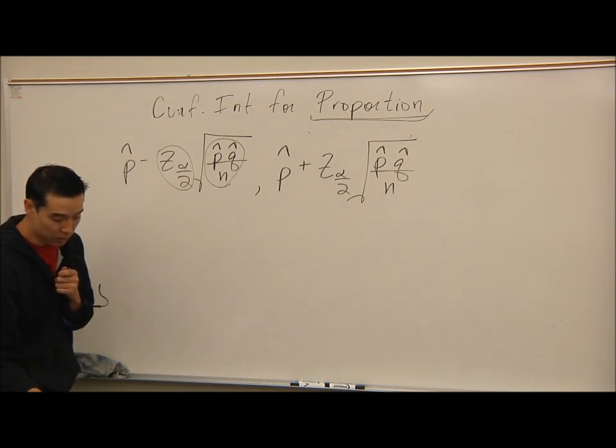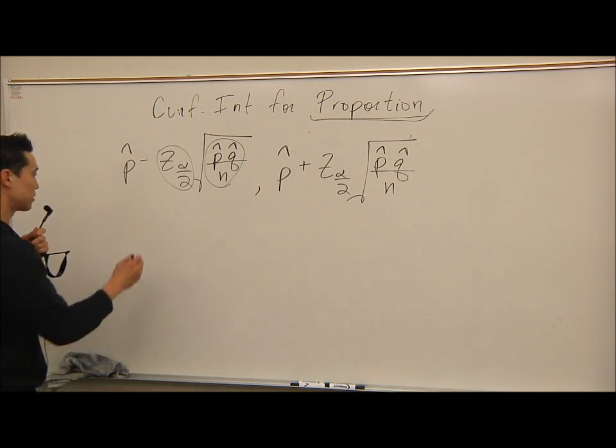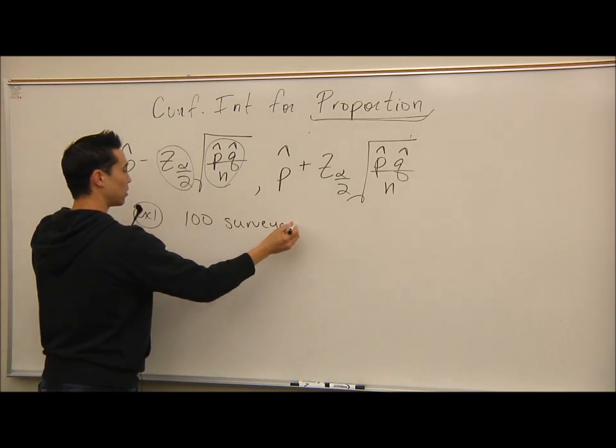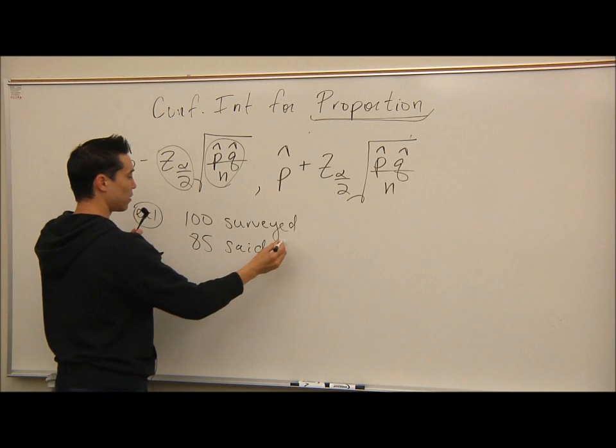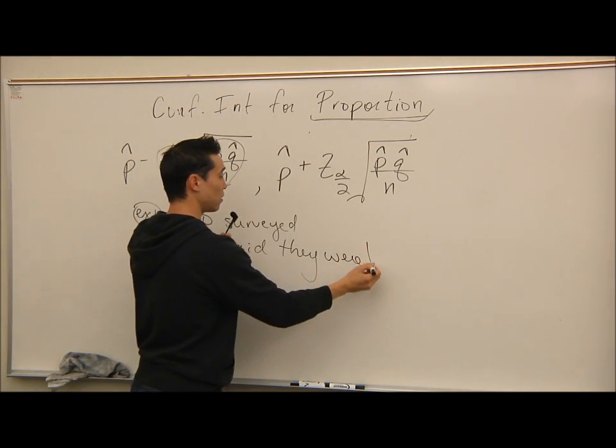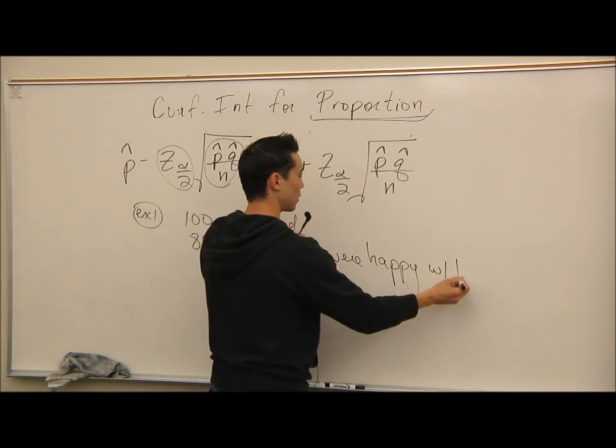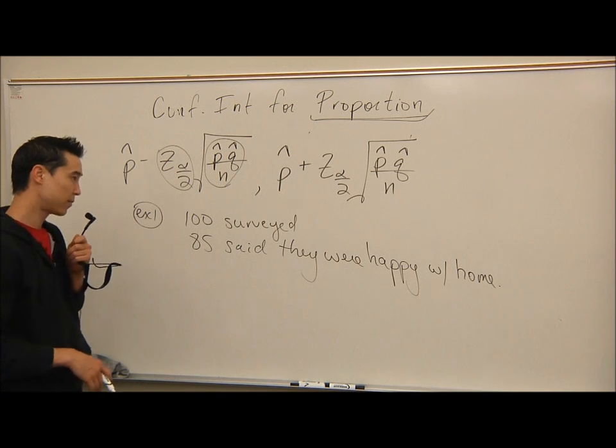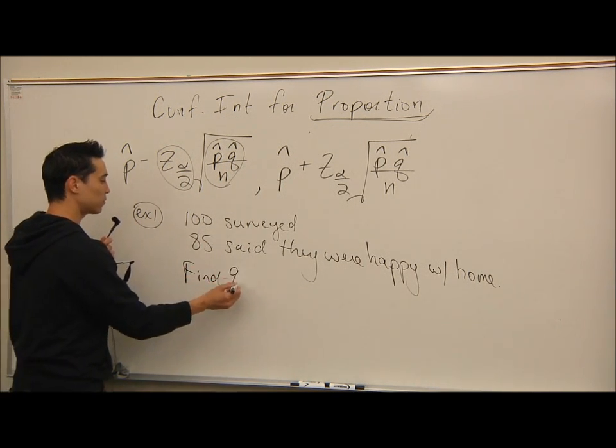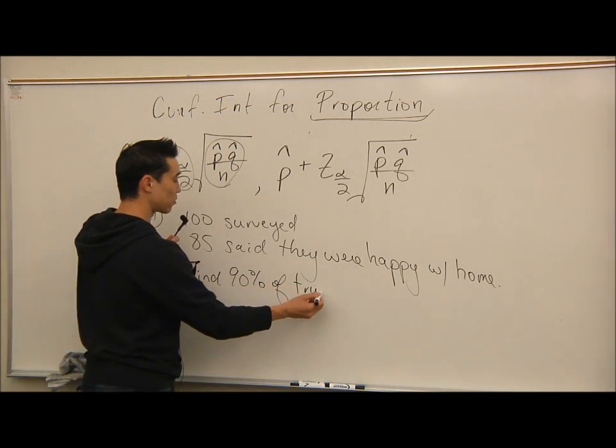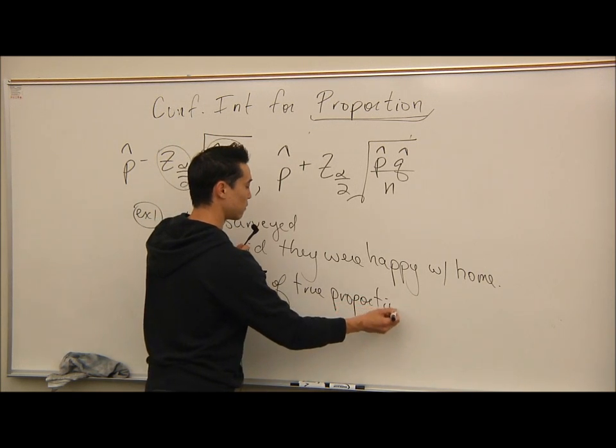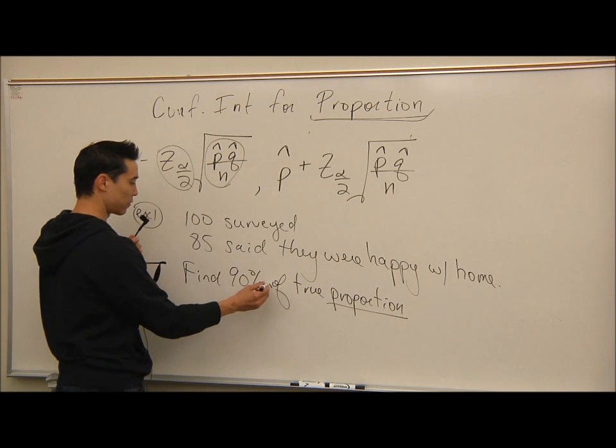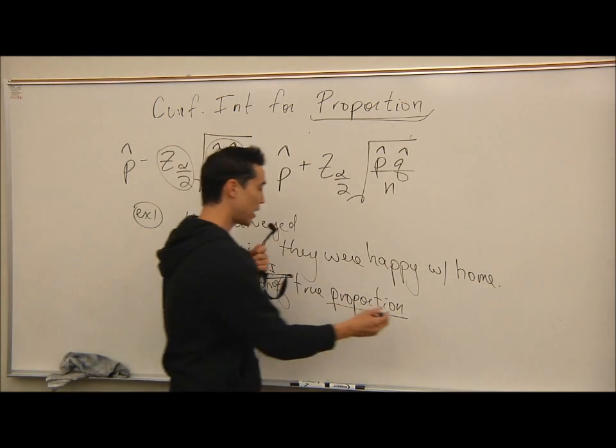Let's do an example. In a recent study of 100 people, 85 said they were satisfied with their present home. So we have 100 people surveyed, 85 said they were happy or satisfied with their home. Find the 90% confidence interval for the true proportion of people happy with home.